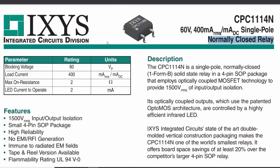The solid state relay used in the demo is a lower-power MOSFET-based relay, not TRIAC-based, so it can handle both DC and AC. Looking at the specs, it can handle 60 volts and 400 milliamps RMS. It's a form B single pole single throw relay, meaning it's normally closed — with no control signal applied it stays closed, and you apply the signal to open it. It only requires 2 milliamps to actuate.